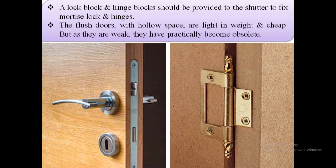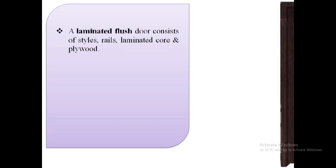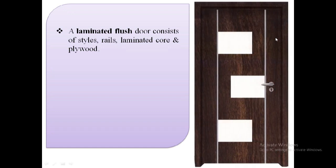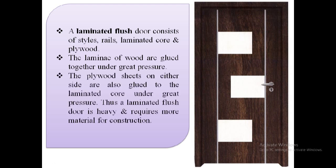Flush doors with hollow space are light in weight and cheap, but as they are weak they have practically become obsolete. The hollow space is sometimes filled with granulated cork or any other light material. In a laminated flush door, which consists of stiles, rails, laminated core, and plywood, the laminas of wood are glued together under great pressure. The plywood sheets on either side are also glued to the laminated core under great pressure, making a laminated flush door heavy and requiring more material for construction.